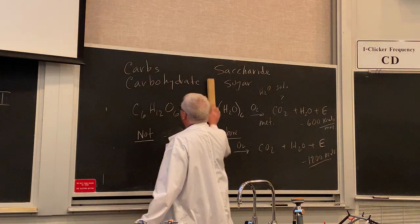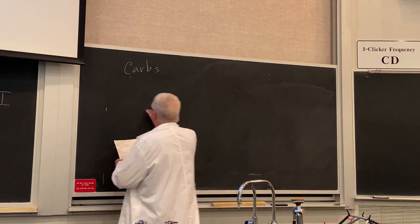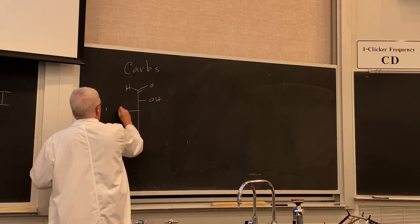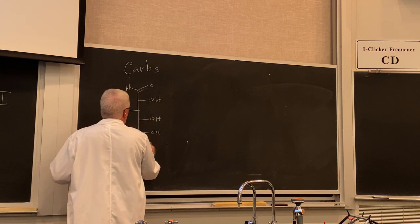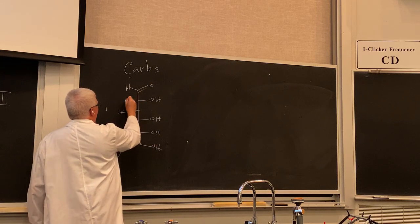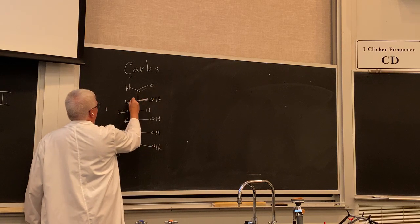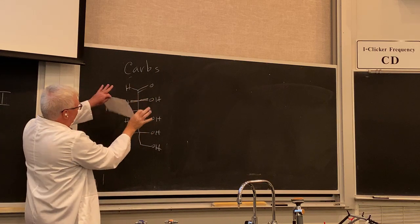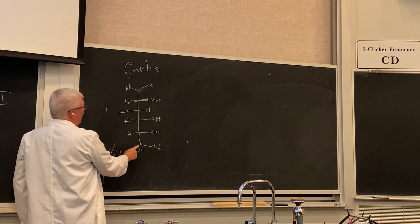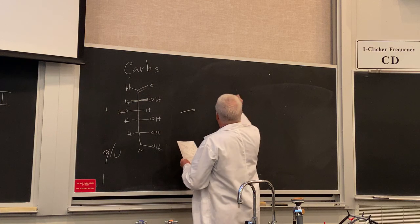Let's look at the key sugar, glucose, in detail. It is an aldehyde with the right-left-right-right pattern in the Fisher projection. Count the stereocenters: C2, C3, C4, C5 — four stereocenters. The C1 aldehyde and C6 primary alcohol are not stereocenters. In the Fisher projection, anything in the horizontal plane comes out toward you; anything in the vertical plane goes back.